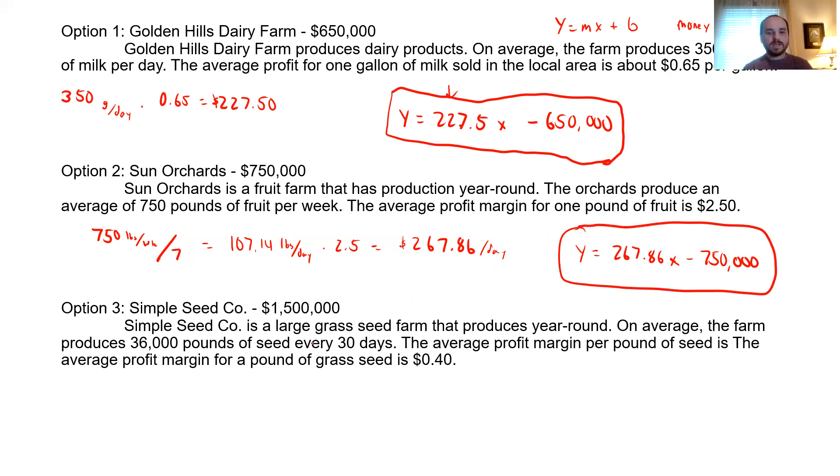So its formula would be Y equals, the rate is 267.86 times X. And then this one we're subtracting 750,000. So there's our second formula. And I'm going to kind of box these because we're going to need these later. And then the last one, a simple seed company, a large grass seed farm that produces year-round. On average, the farm produces 36,000 pounds of seed every 30 days. So again, we need to take 36,000, divide that by 30 to give us the amount per day, which gives us 1,200 pounds per day. And then it makes an average of 40 cents per pound, so times 0.4. And that gives us 480. So they make $480 per day. And again, this part I think you guys all got through pretty easily. I think all of you got to these steps right here. So then we just turn it into our linear equation. Y equals 480X minus 1,500,000.